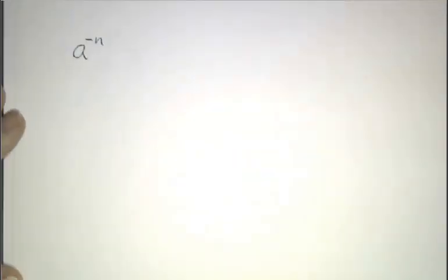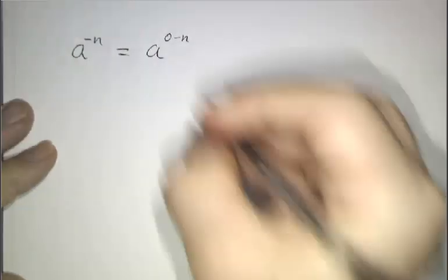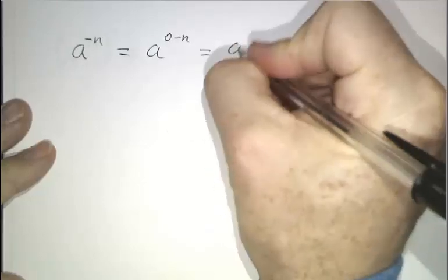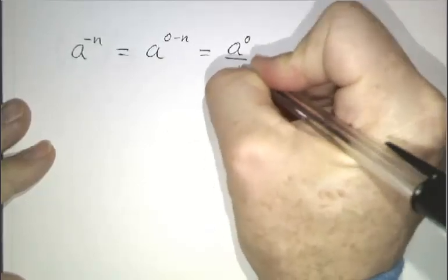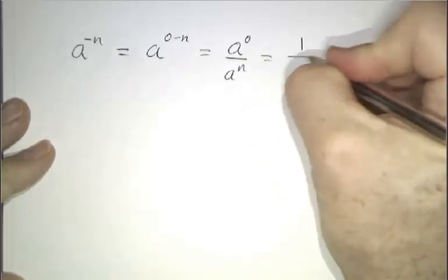Now let's talk about negative powers. Suppose we want the negative nth power of something, like 5 to the minus third. Well, this is a to the 0 minus n. And our law of exponents said that that had to be a to the 0 divided by a to the n. And we just said that a to the 0 was 1.